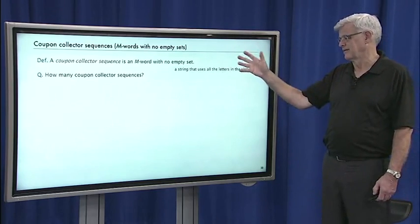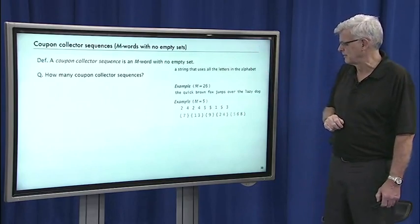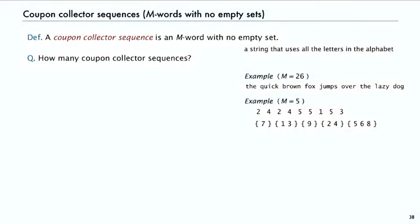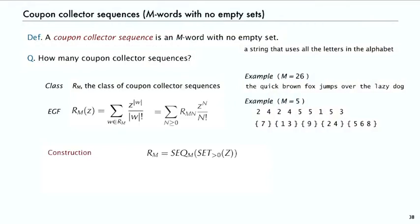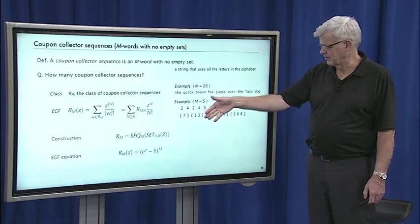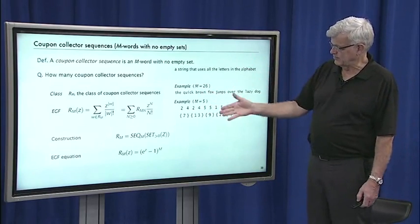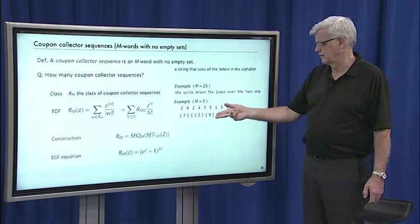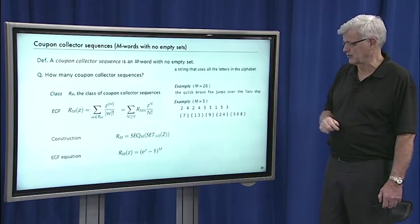Another example is coupon collectors at the other end of the spectrum. That's a string that uses all the letters in the alphabet. So it's a sequence of sets, none of them are empty. By now you can practically write down this construction yourself. A coupon collector sequence is a sequence of length M of sets that are all of size bigger than zero. The transfer theorem immediately gives a generating function equation. Set of size greater than zero is e^z minus one—subtract off the first term, the set of zero. Then sequence of M of those is (e^z - 1)^M. That's the generating function that describes the coupon collector sequences exponential generating function.